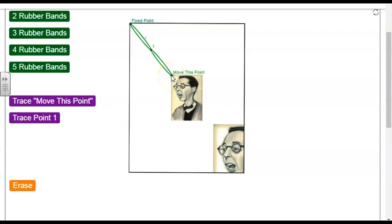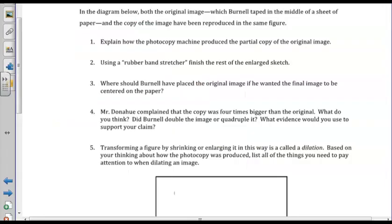So the first question is asking us, how did this happen? How did the image end up in the bottom right corner? So if we take a look and we put that middle rubber band on his nose, the focal point, the fixed point up in the top right corner, we see that this actually is a perfect dilation of that point on his nose. So what happened was, Bernal must have taken the portrait of the grandfather and put it in the top right corner so that the top right corner was fixed here on the photocopy machine. So that's not actually what Mr. and Mrs. Donahue were looking for.